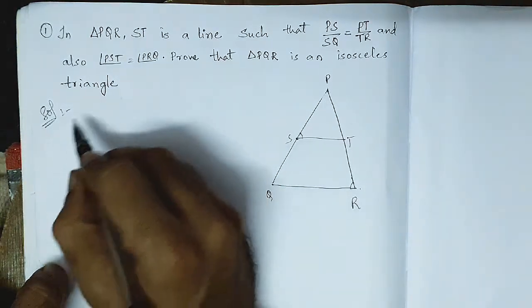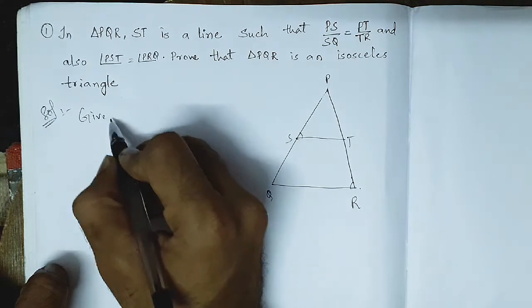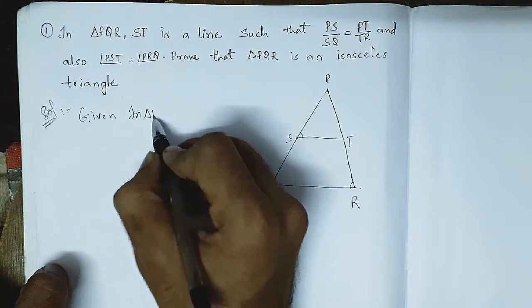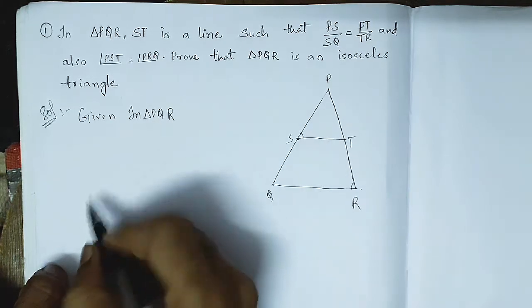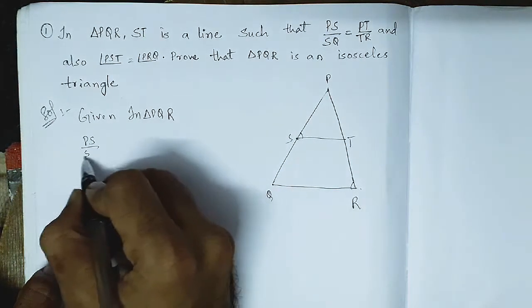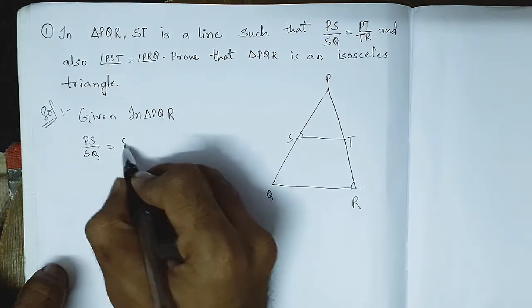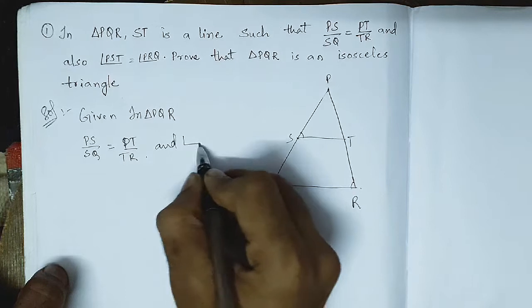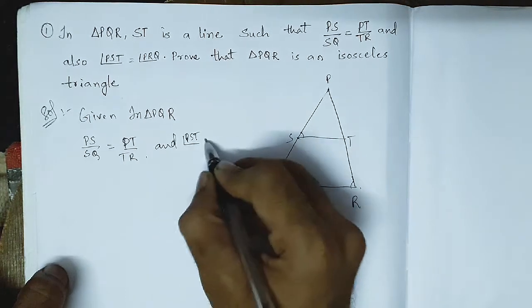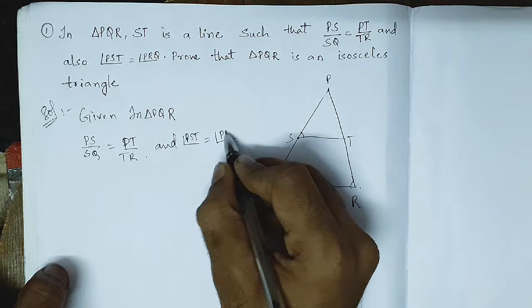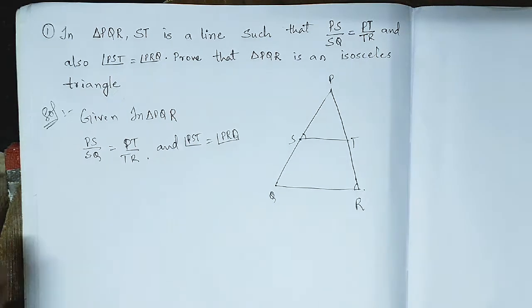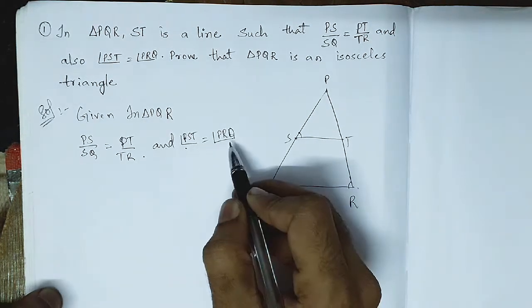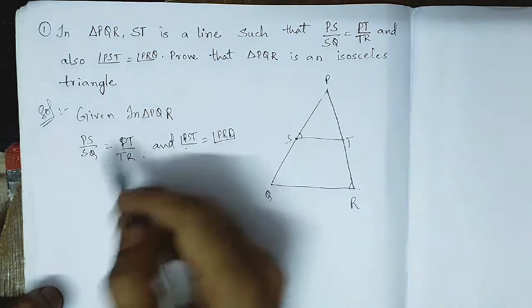In the solution, let us write what is given. Given: in triangle PQR, PS by SQ equals PT by TR, and angle PST equals angle PRQ.